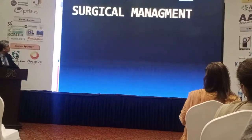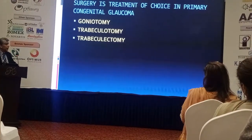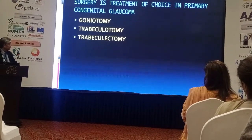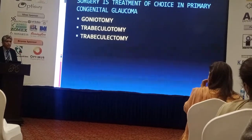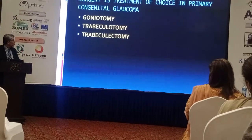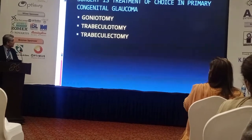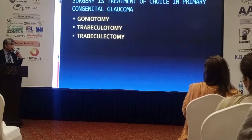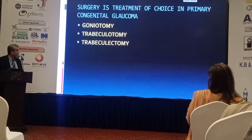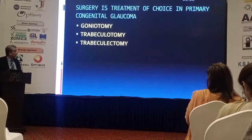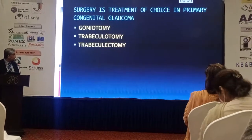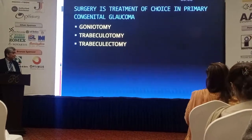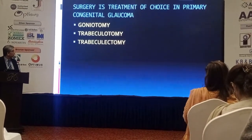Surgical management: goniotomy is performed if the cornea is clear. It all depends on the state and stage of the congenital glaucoma. If the pressure is very high, like 40+, you might go straight to trabeculectomy or trabeculectomy plus trabeculotomy. But if the pressure is in the 20s and early 30s, goniotomy and trabeculotomy work well.